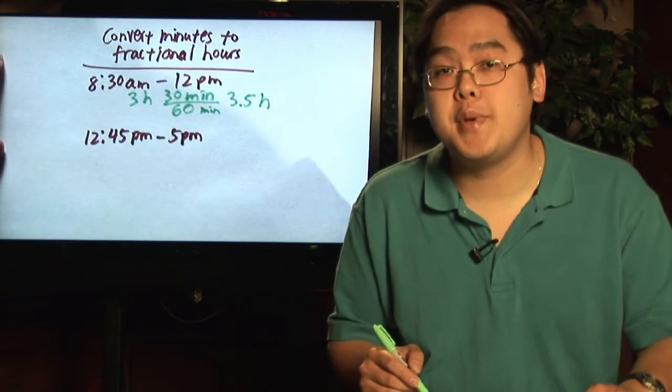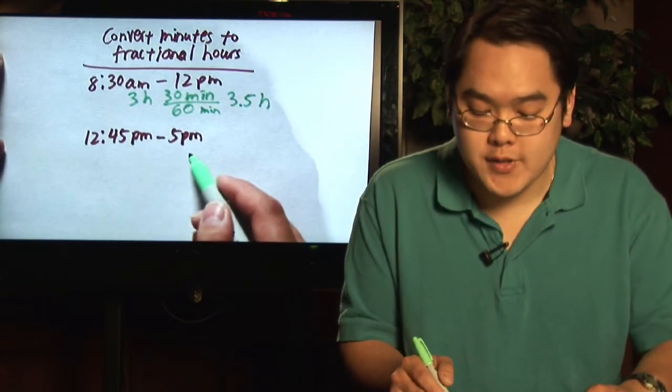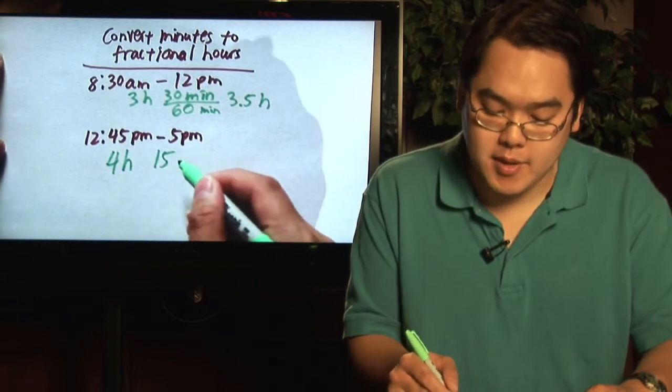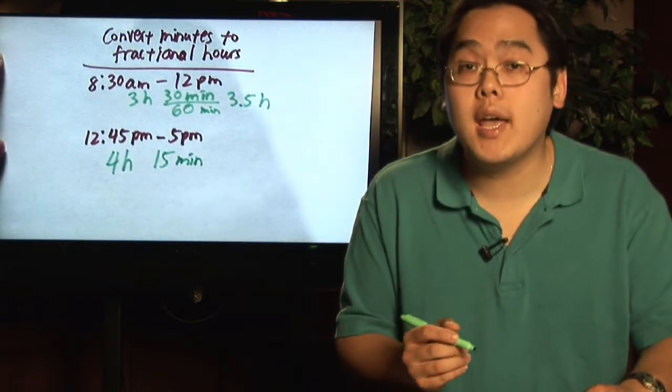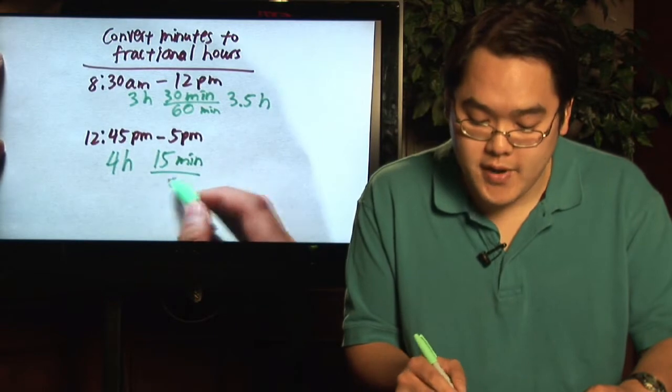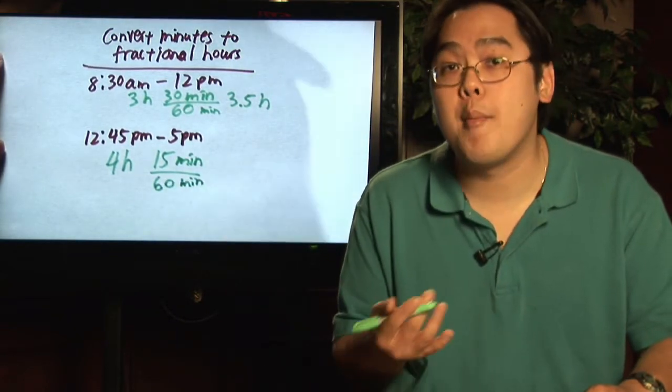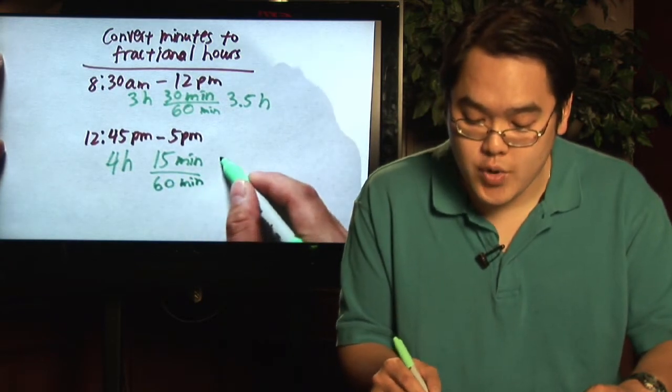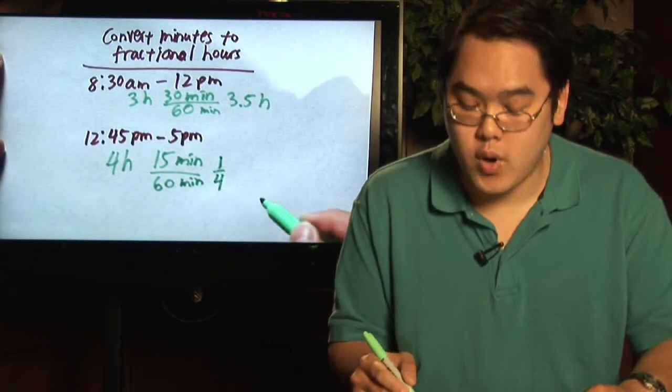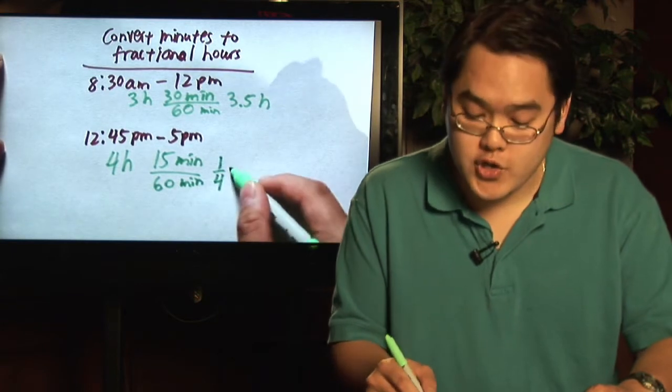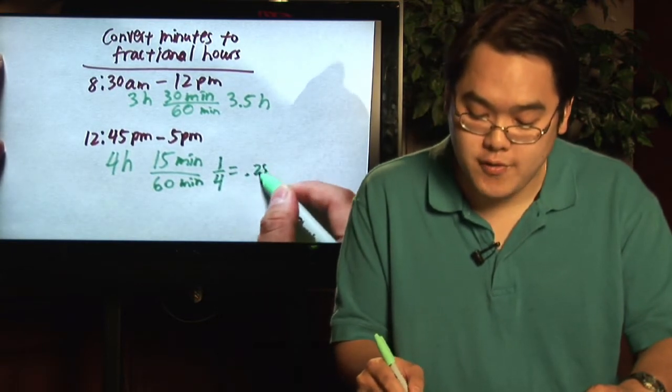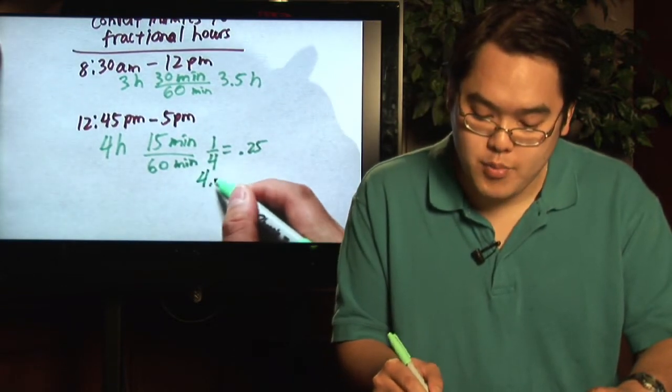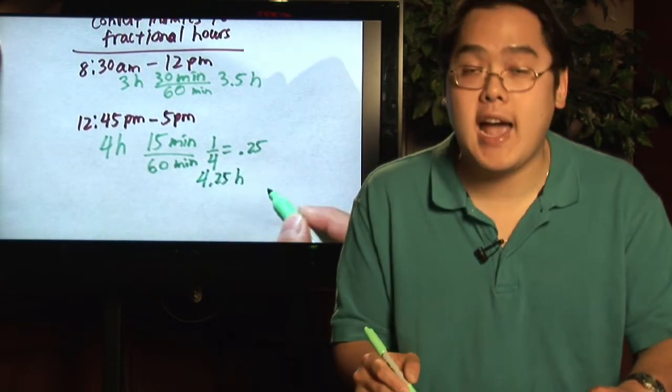Let's talk about the 12:45 to 5 p.m. 12:45 to 5 p.m. represents four hours and 15 minutes. Again, take that 15 minutes and divide that by 60 to figure out how many hours 15 minutes is. 15 over 60 reduces to 1/4 of an hour, which is 0.25. So really, 12:45 to 5 p.m. represents 4.25 hours.